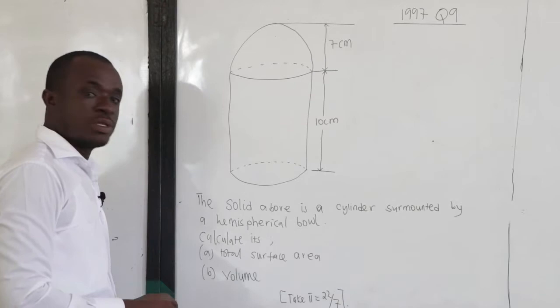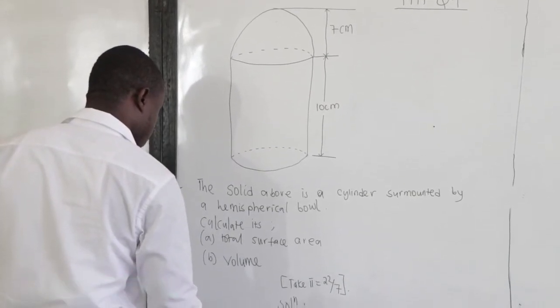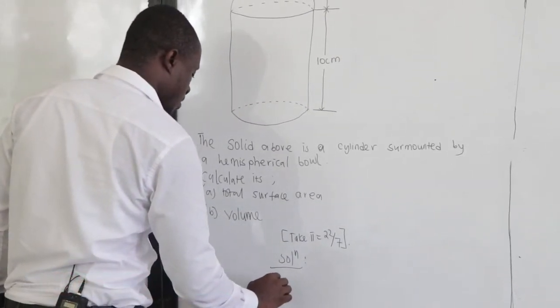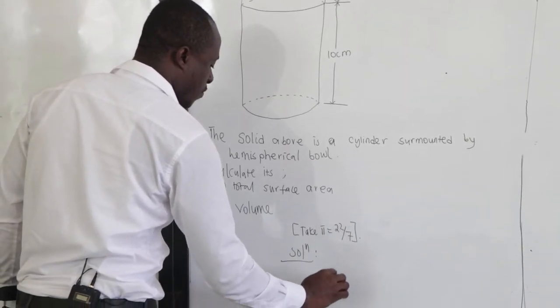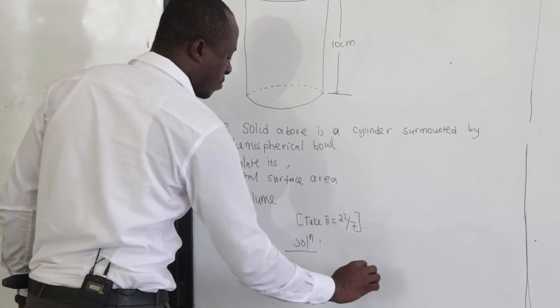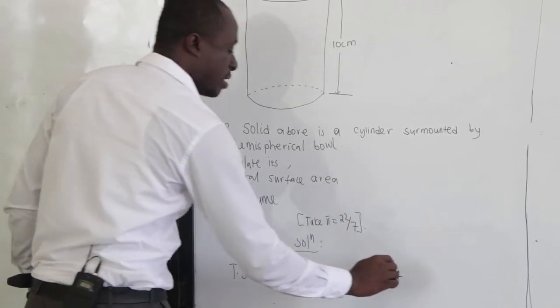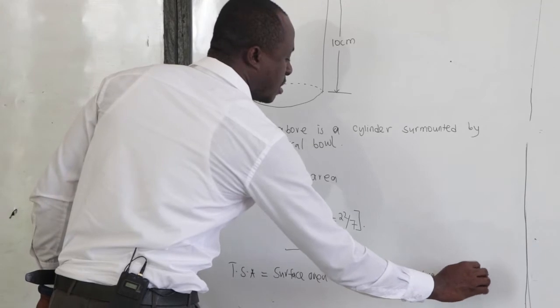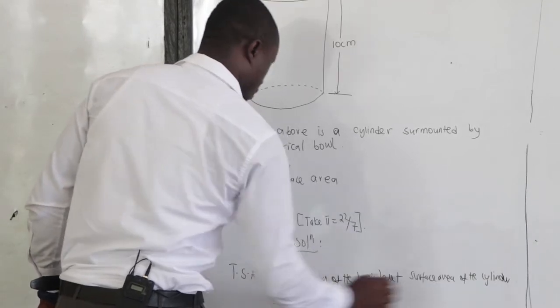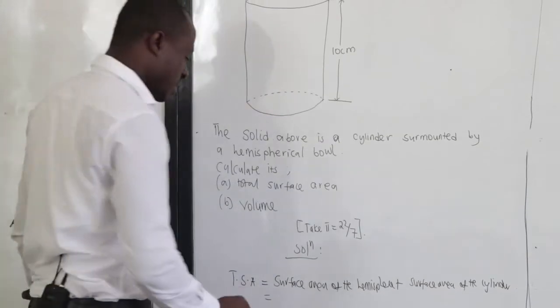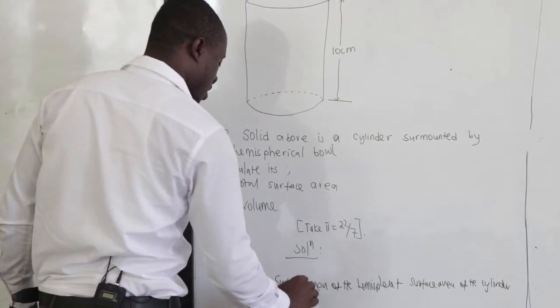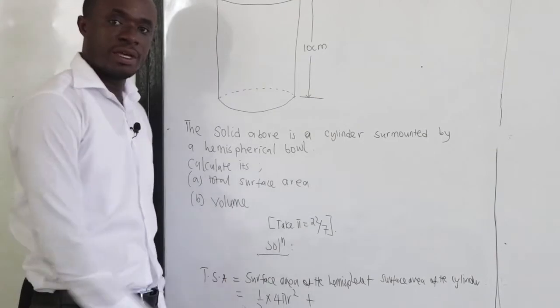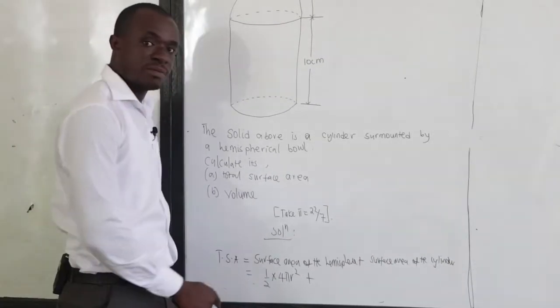The first one, we have to find the total surface area. So our total surface area is equal to the surface area of the hemisphere plus the surface area of the cylinder. Now, because it's a hemisphere, we know that the surface area is half times 4 pi r squared. The area of a sphere is 4 pi r squared, but because it's a hemisphere, that is times half.